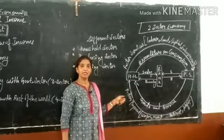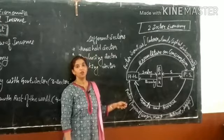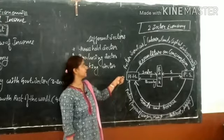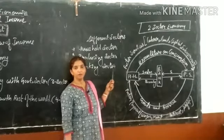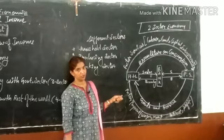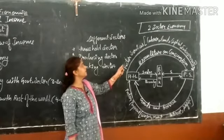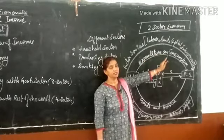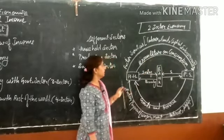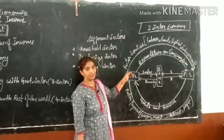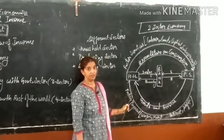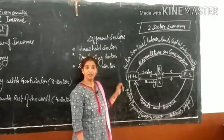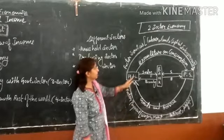The flow will start from household sector, as household sector is the supplier of factors of production. It provides different types of factor services such as labor, land, capital, interest, and so on.